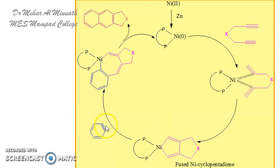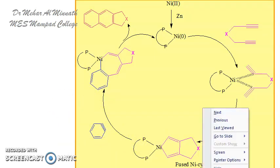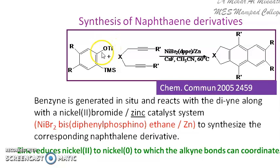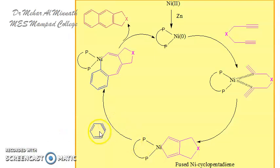Now comes the benzyne. The benzyne comes from the aromatic compound which has a triflate and a TMS group attached. These two groups help in the formation of benzyne — they can be easily removed and benzyne is formed. This benzyne then gets inserted into the fused nickelacyclopentadiene system.